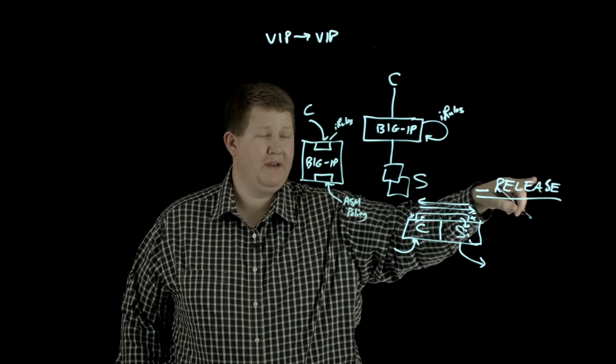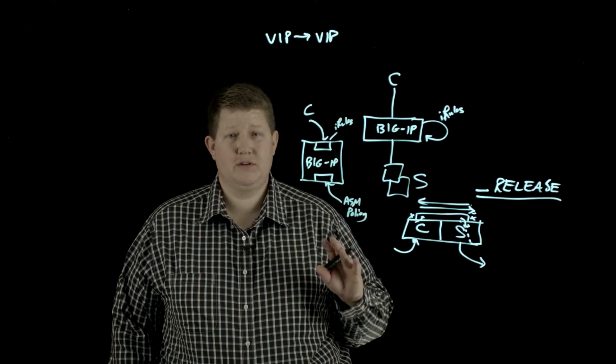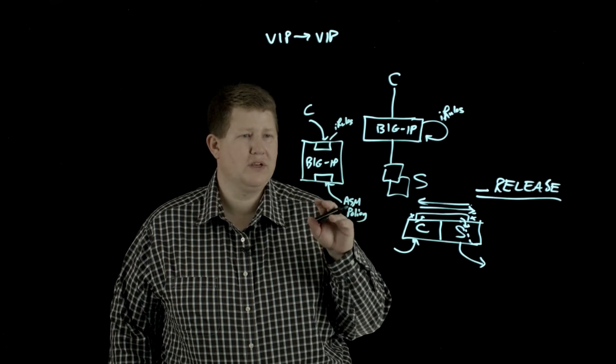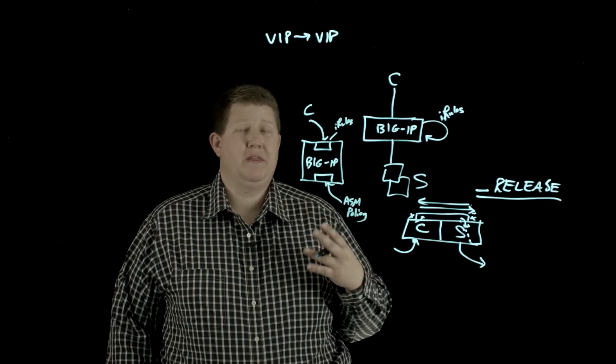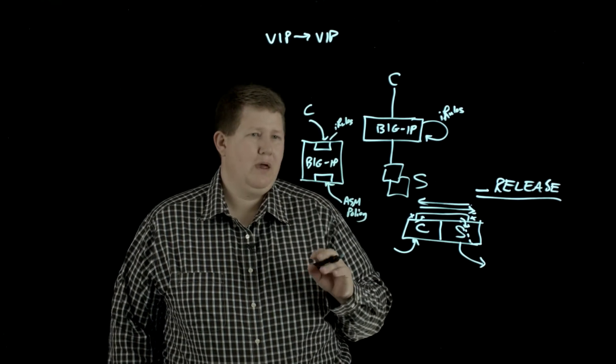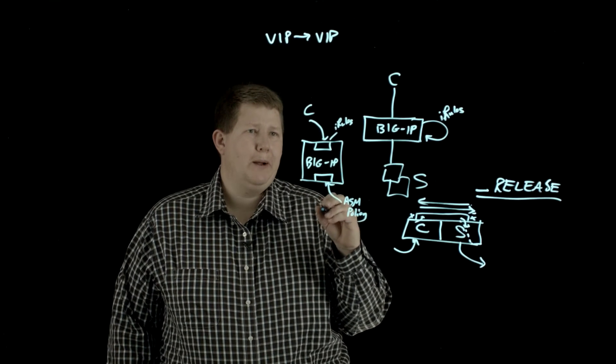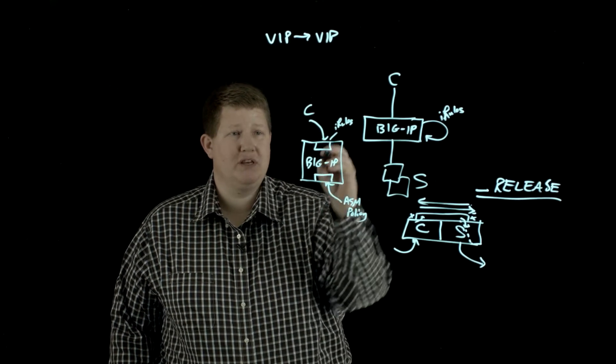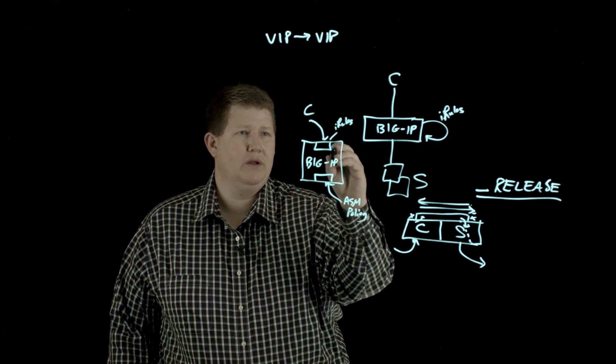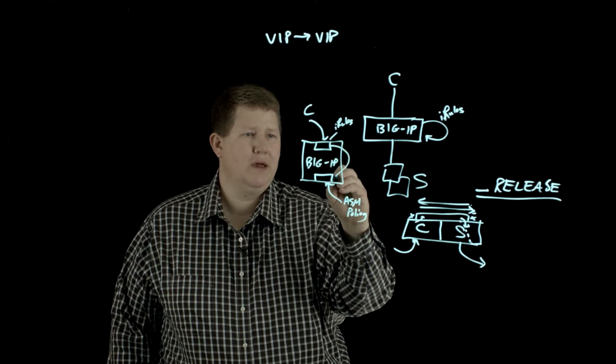And then here is where we applied our ASM policy. Now, again, with events like this, in most scenarios, we could have completely rewritten our iRules and done it all on one VIP. But the power of having a VIP to VIP is that we didn't have to do that. And at the time, we couldn't anyway. But we could have all the iRules here, and then we would target from this VIP to this VIP. And the way that that's done